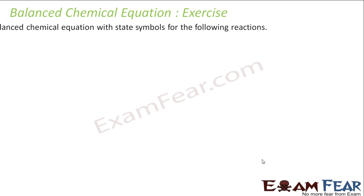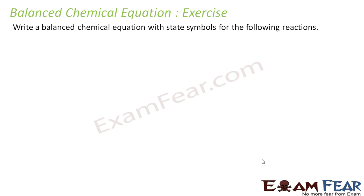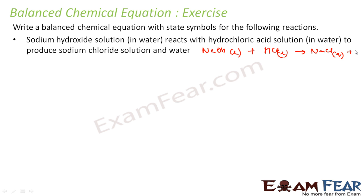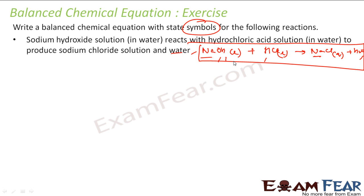Let us take one more example: write a balanced chemical equation with state symbols. Sodium hydroxide in water, NaOH(aq), reacts with hydrochloric acid HCl(l) to give sodium chloride solution — NaCl in aqueous solution — plus water. This is already a balanced equation: sodium is 1 on both sides, oxygen is 1 on both sides, hydrogen is 2 on both sides, and chlorine is 1 on both sides.